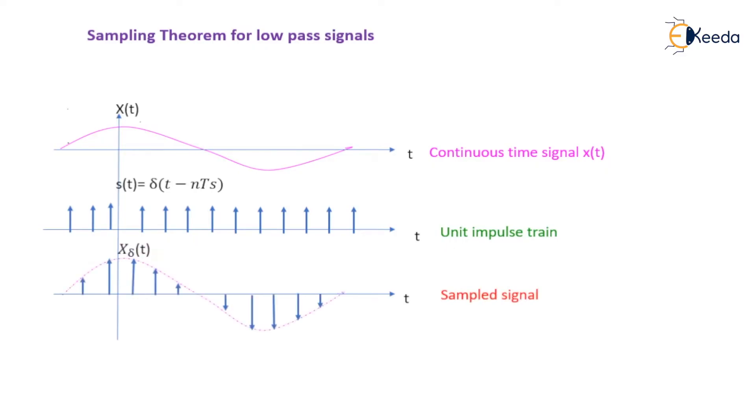Here the samples will look like the amplitude of the samples will try to attain the maximum value and minimum value of the continuous time signal. It will try to track down the signal and it is called a sampled signal, which is indicated by x_δ(t).